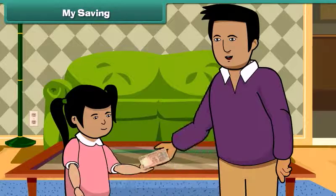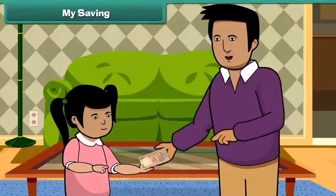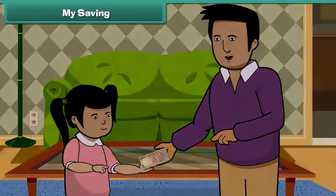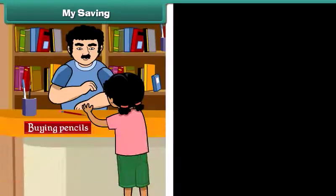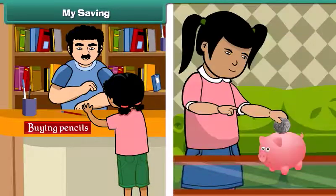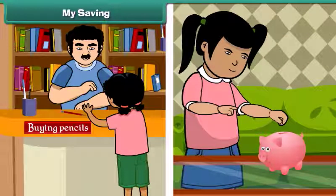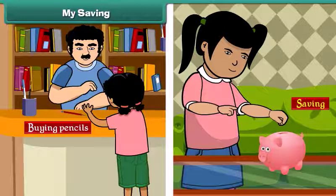Remy's father gave her 10 rupees. She spent 2 rupees for buying pencils, and the rest she dropped in her piggy bank. The money kept in her piggy bank is called saving.